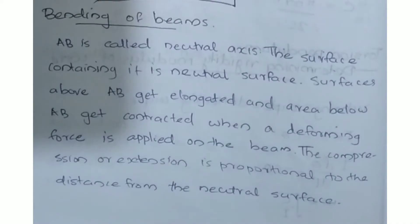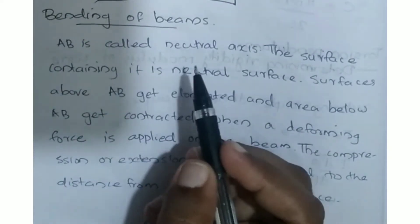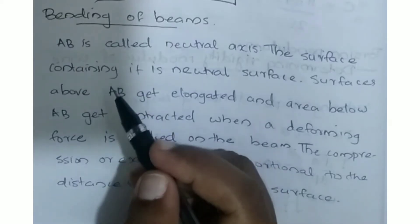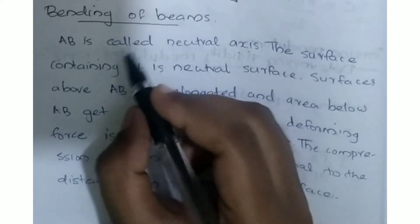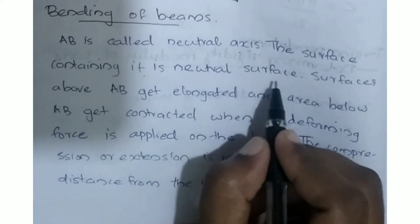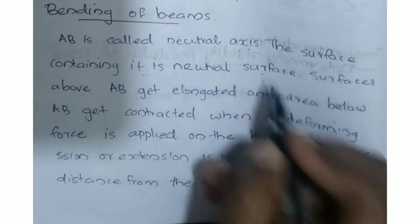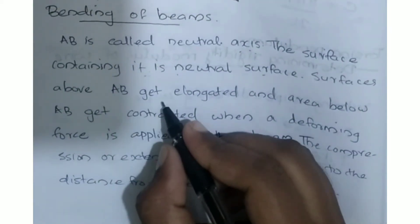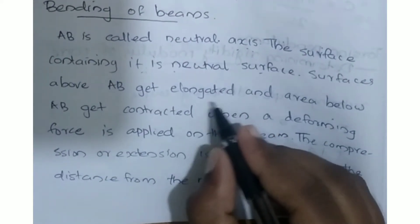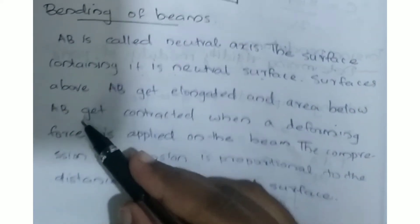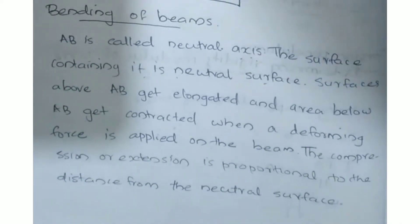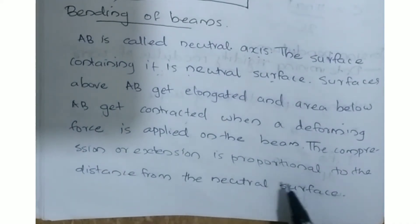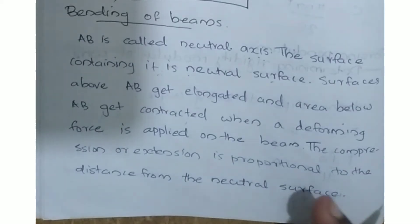The layer AB is called the Neutral Axis. The surface containing it is the Neutral Surface. The surface above AB gets elongated when a deforming force is applied. The area below AB gets contracted. The compression or extension is proportional to the distance from the Neutral Surface.